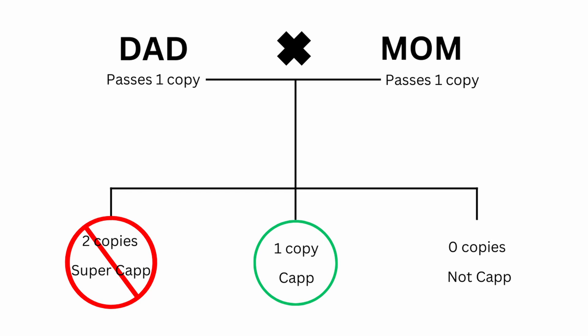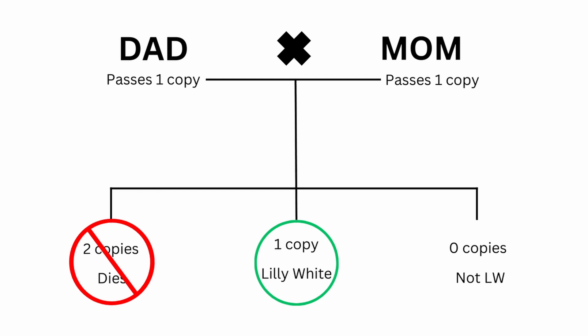The cappuccino gene is an incomplete dominant gene. While one copy of the gene will make a cappuccino crested gecko, two copies of the gene will make a super cappuccino crested gecko. The lily-white gene is a recessive lethal gene, which works the same way as an incomplete dominant; however, animals with two copies of the gene die. Therefore, one copy of the gene will make a lily-white, while two copies of the gene will make a non-viable animal, meaning it will not make it through hatching or it will die right away.